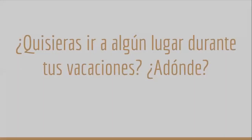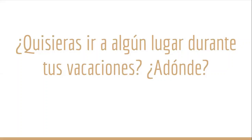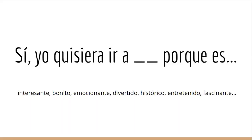Here's another one: ¿Quisieras ir a algún lugar durante tus vacaciones? ¿Adónde? — Would you like to go somewhere during your vacation? Where exactly? You could respond using the same tense — the imperfect subjunctive functioning as the conditional, meaning 'I would.' So: sí, quisiera ir a — and then you give the name of the place, which could be within your country as well. Usually: porque es — and there's a host of adjectives you can use; the list is not limited to those shown.